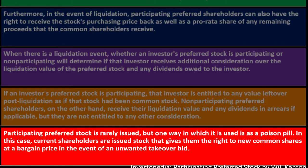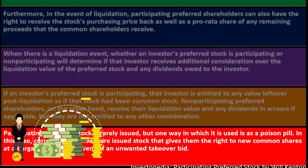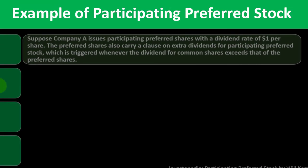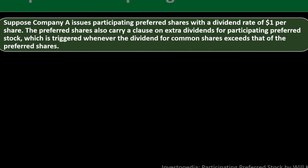Participating preferred stock is rarely issued, but one way it is used is as a poison pill — a situation where they're trying to stop a hostile takeover. In this case, current shareholders are issued stock that gives them the right to new common shares at a bargain price in the event of an unwanted takeover bid. If someone is trying to buy up the corporation's stock to get a controlling interest, the poison pill mechanism is used to prevent that from happening.